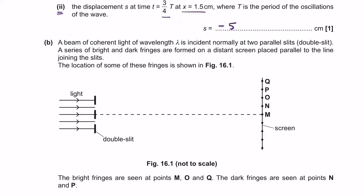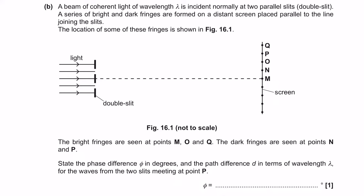For part B, a beam of coherent light of wavelength λ is incident normally on two parallel slits. A series of bright and dark fringes are formed on a distant screen. Bright fringes are formed at M, O, and Q; dark fringes at N and P. We need to work out the phase difference in degrees and the path difference D in terms of λ for the waves from the two slits meeting at point P.